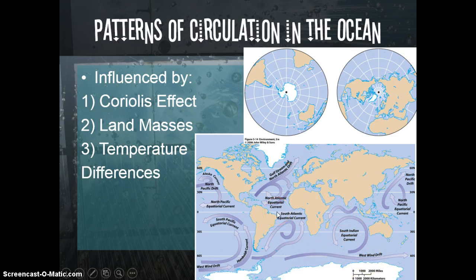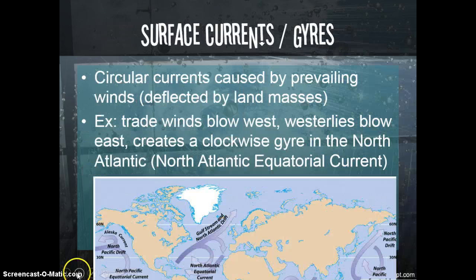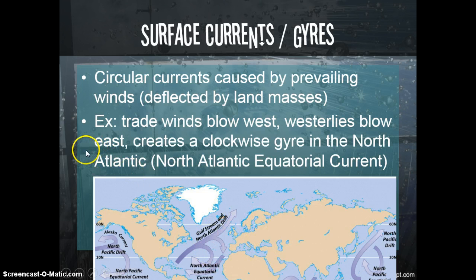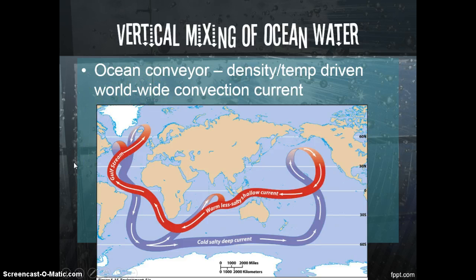Two other major factors influence ocean circulation: the position of the continents and differences in temperature and salinity. When we look at currents, we usually look at surface currents known as gyres — circular currents moving clockwise or counterclockwise, caused by the prevailing winds pushing surface water and deflected off land masses. For example, the trade winds around the equator blow towards the west and the westerlies blow towards the east, causing the North Atlantic Equatorial Current. So it's really the winds causing these surface currents.